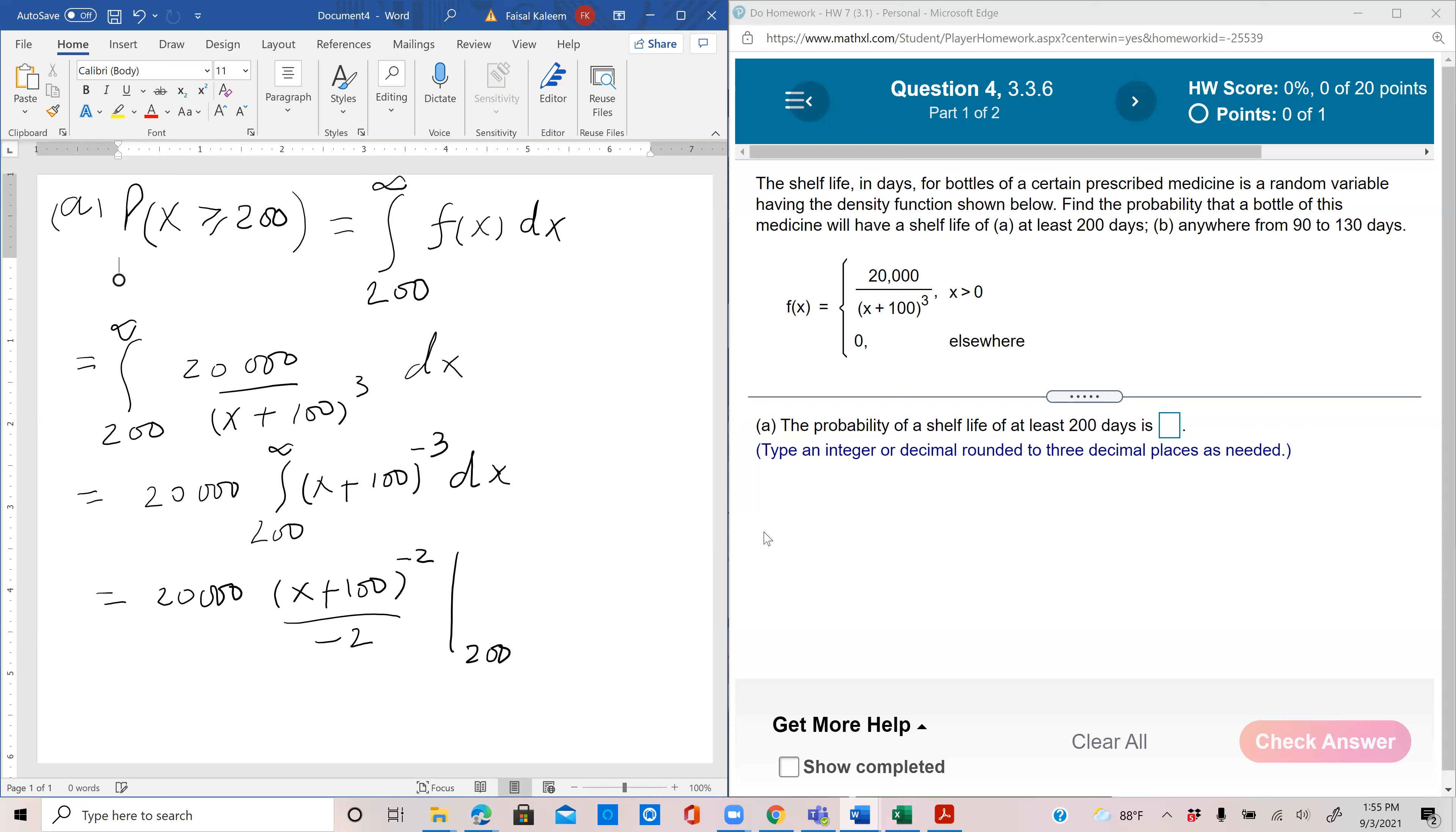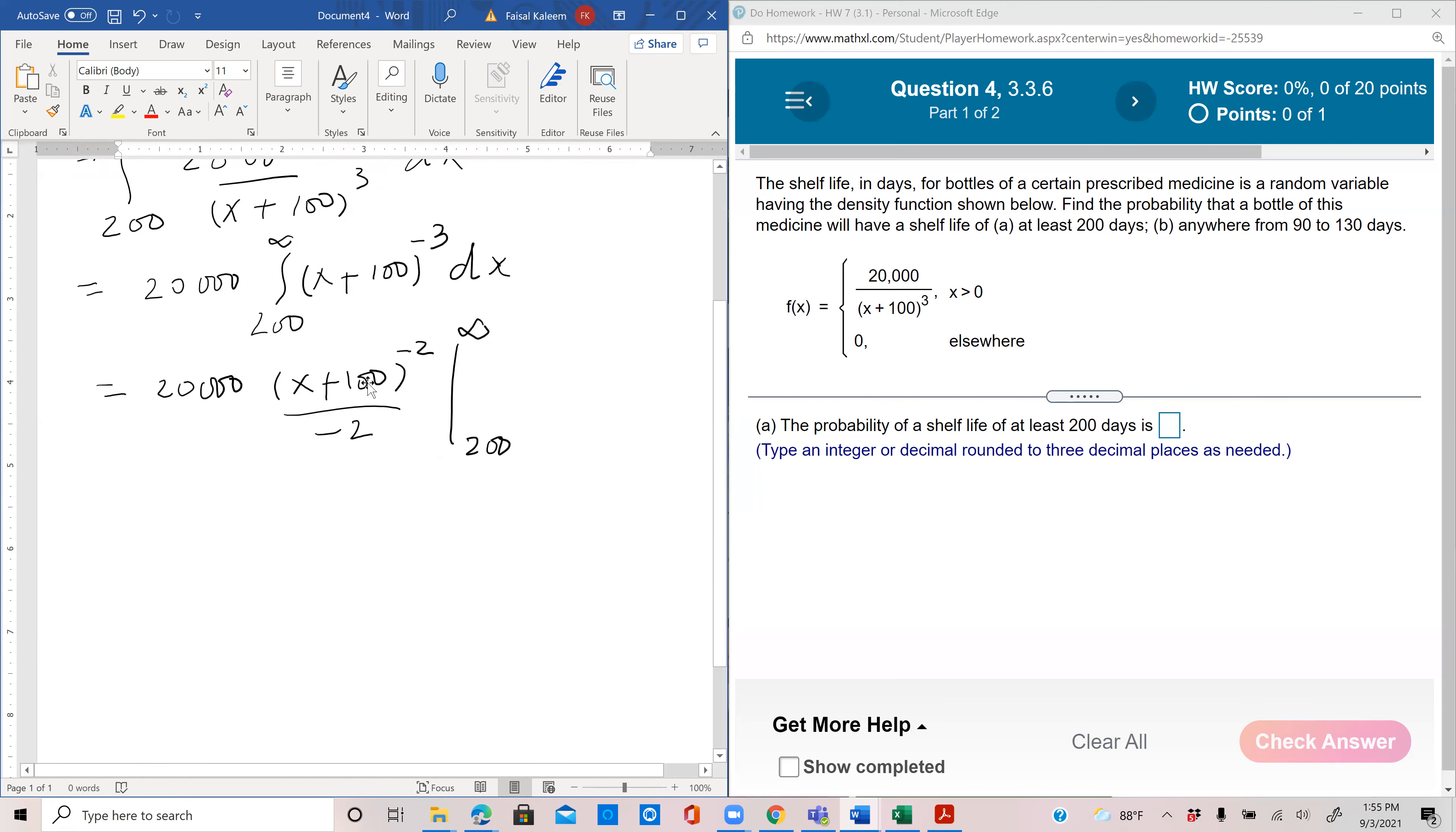So 200 to infinity, and this simplifies to 20,000 over negative 2 is negative 10,000. Whenever you are substituting infinity as the limits, it helps if you make all powers positive before applying the limits, so that you know exactly what's going on with the infinity part.